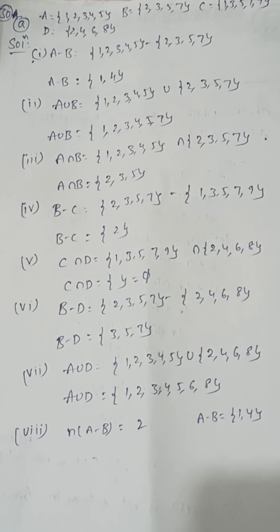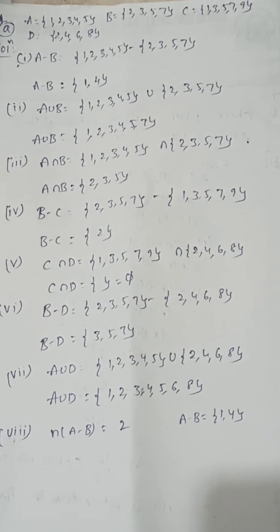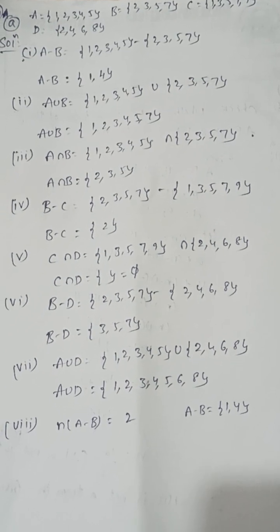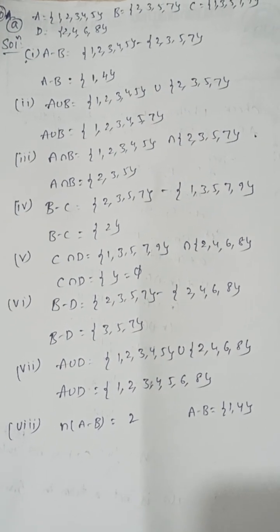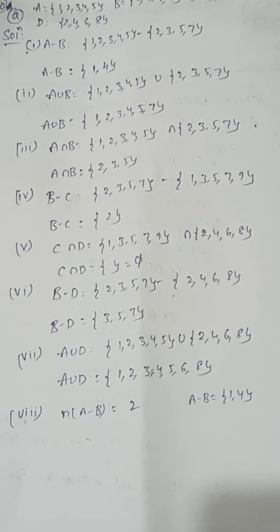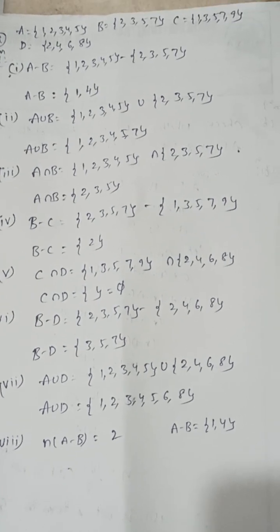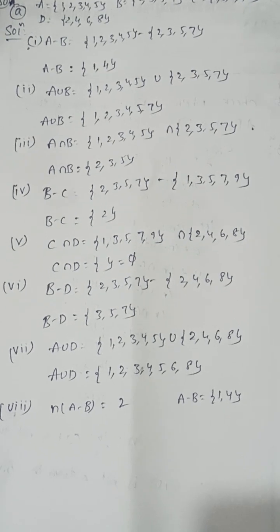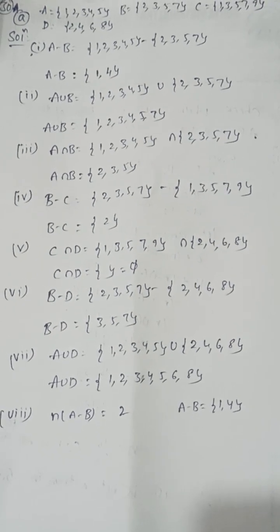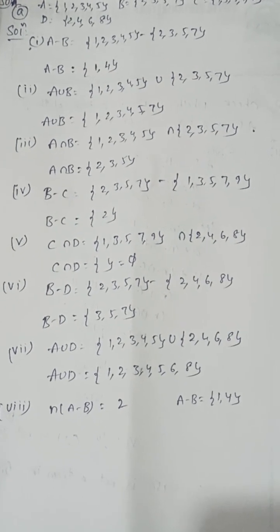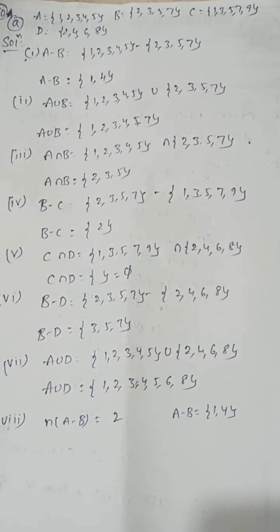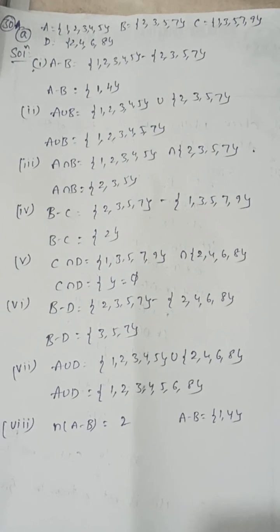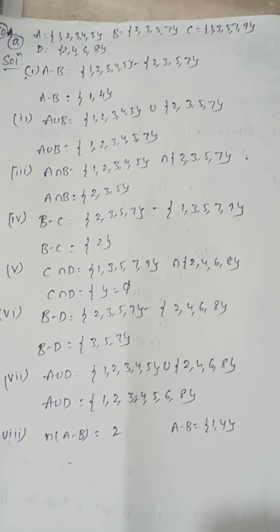Given A = {1,2,3,4,5}, B = {2,3,5,7}, C = {1,3,5,7,9}, D = {2,4,6,8}. Find A − B. A − B means removing the elements of B from A, keeping only elements in A not in B. A − B = {1, 4}, so n(A−B) = 2.